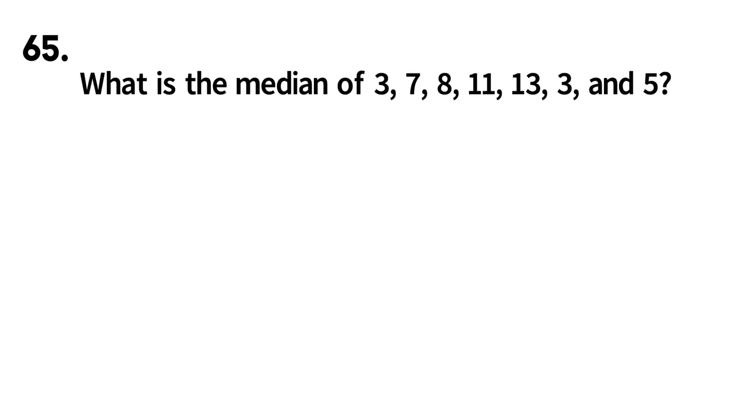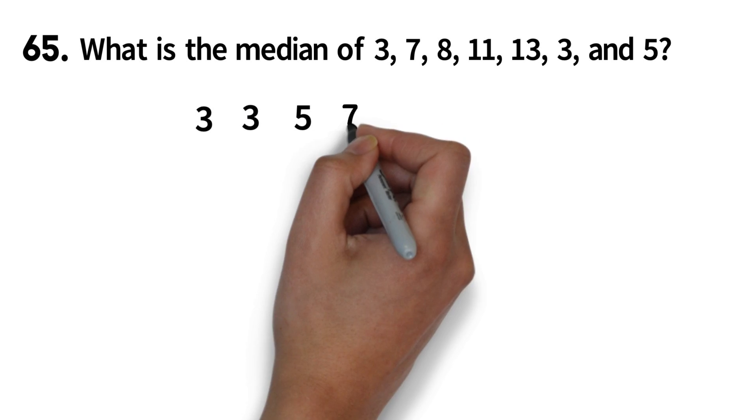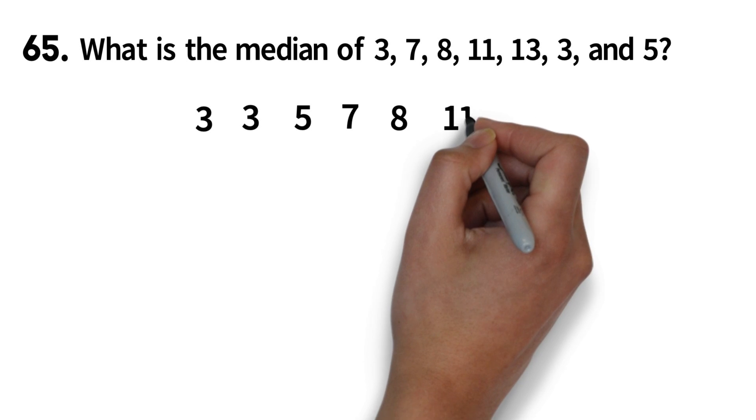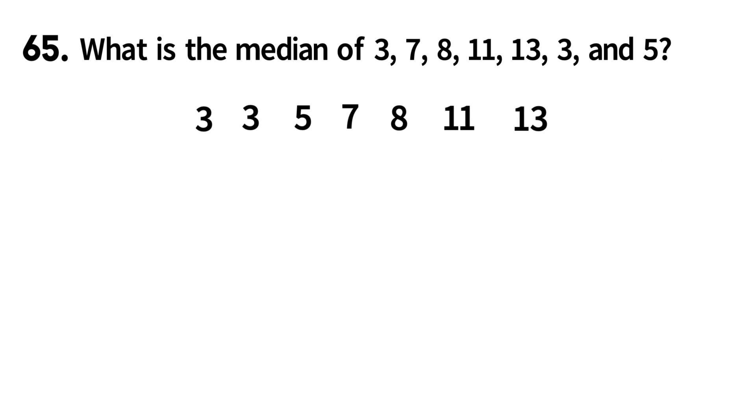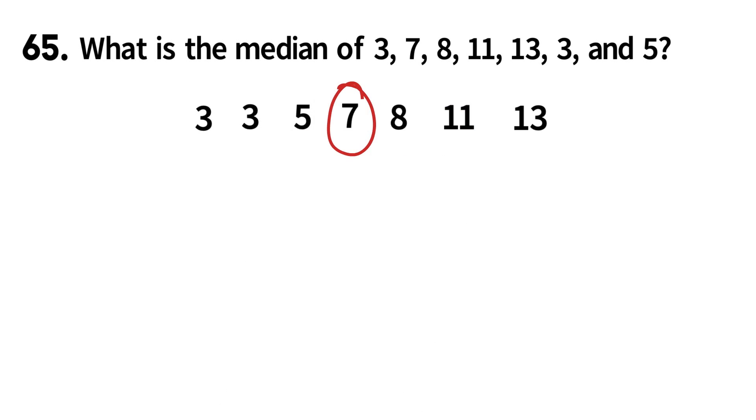Question 65. What is the median of 3, 7, 8, 11, 13, 3, and 5? The median of a set of numbers is simply the middle number when the numbers are arranged. So here, I can arrange the numbers as 3, 3, 5, 7, 8, 11, and 13. So here, we can see that 7 will be the middle number. There are 3 numbers to the left and 3 numbers to the right.